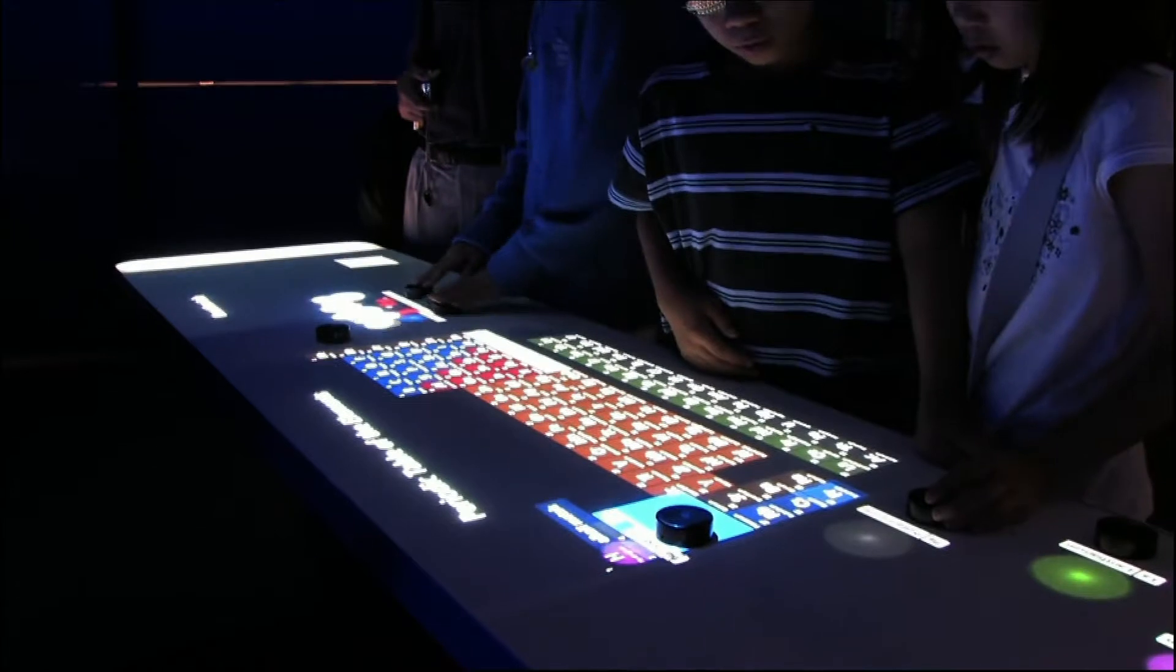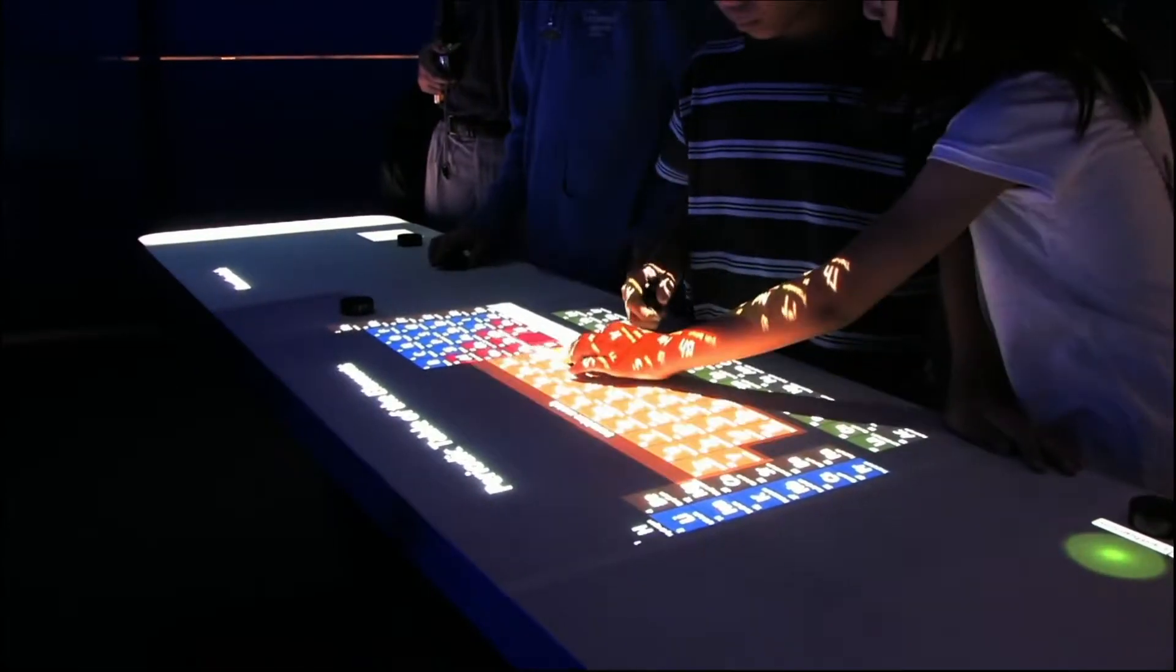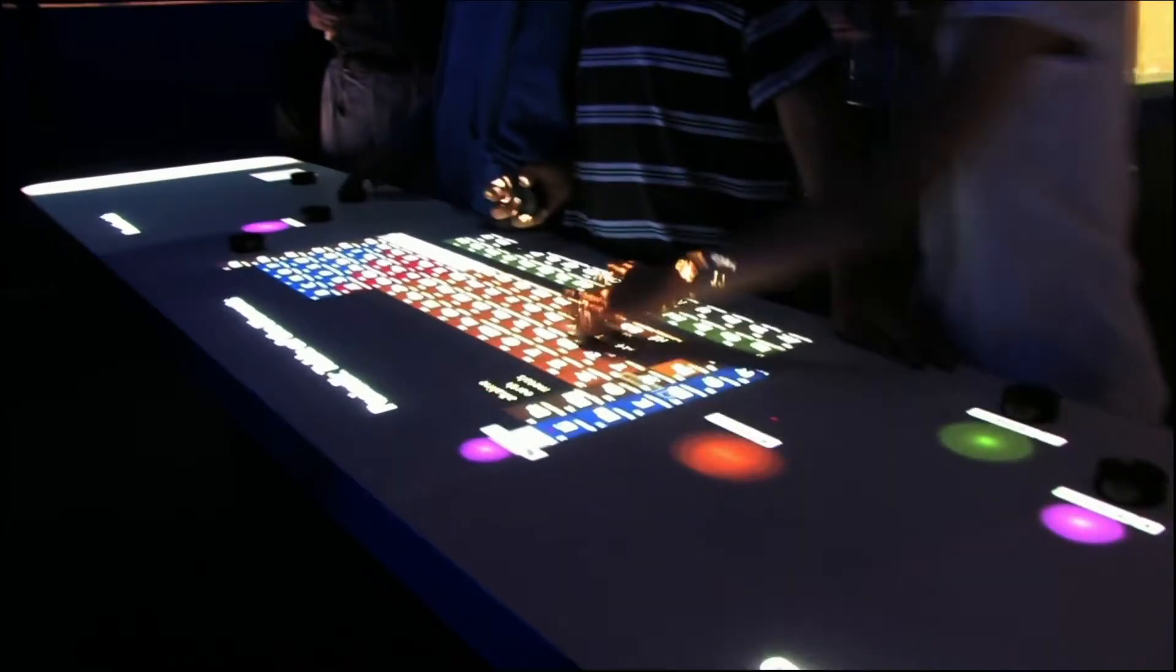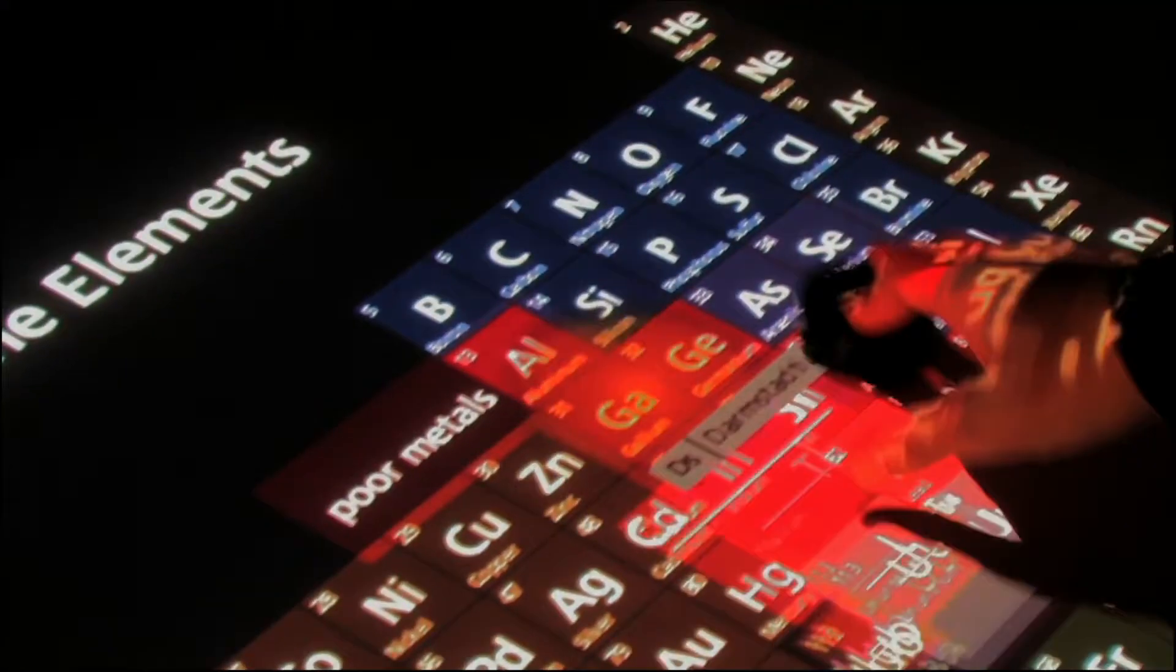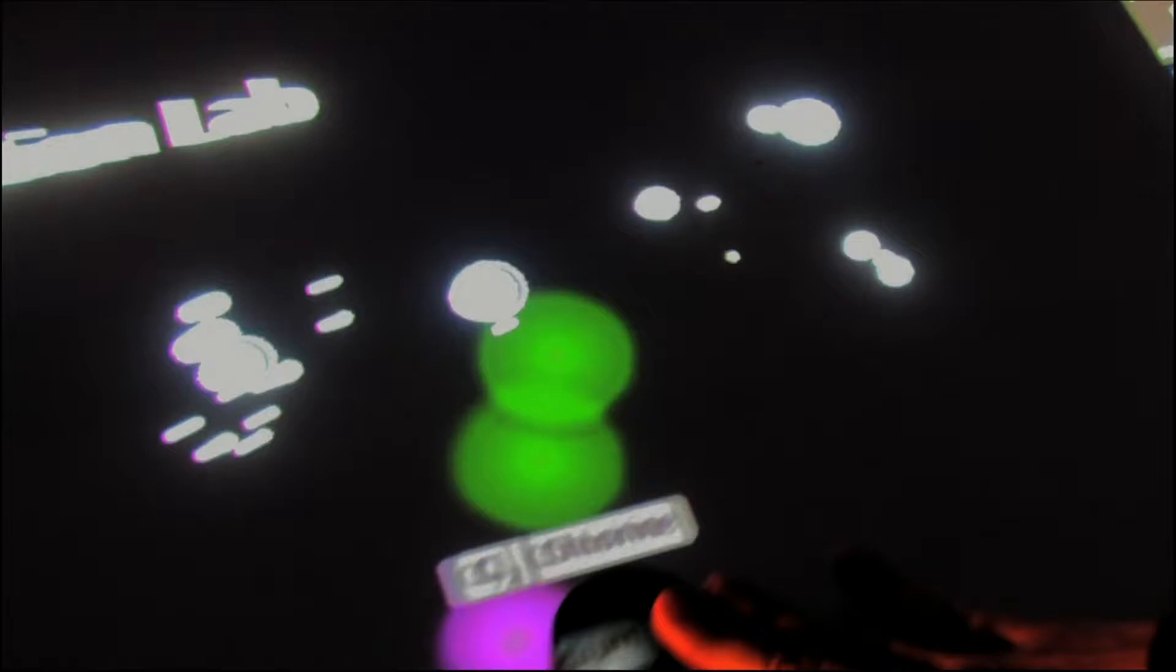This is an exhibit at the Museum of Science and Industry in Chicago. It's part of their huge new science storms wing. And the idea is that we have a periodic table of the chemical elements, and people can use physical objects to grab atoms off the periodic table and try to bring them together to cause chemical reactions to happen.